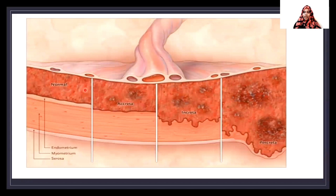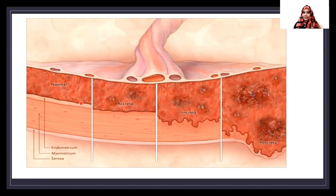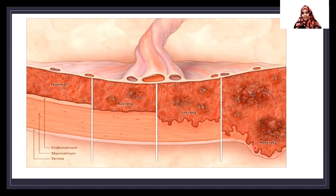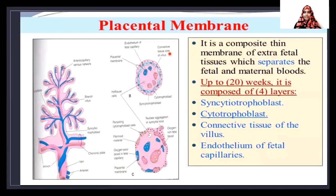Placenta accreta, increta, and percreta relate to the depth of placental insertion into the uterine wall. Normally the placenta attaches to the endometrium. In placenta accreta, the placental insertion goes deeper into the endometrial layer. In placenta increta, the insertion goes beyond the endometrium and reaches the myometrium. In placenta percreta, the placenta inserts more deeply into the myometrium and reaches the serosal layer of the uterine wall.